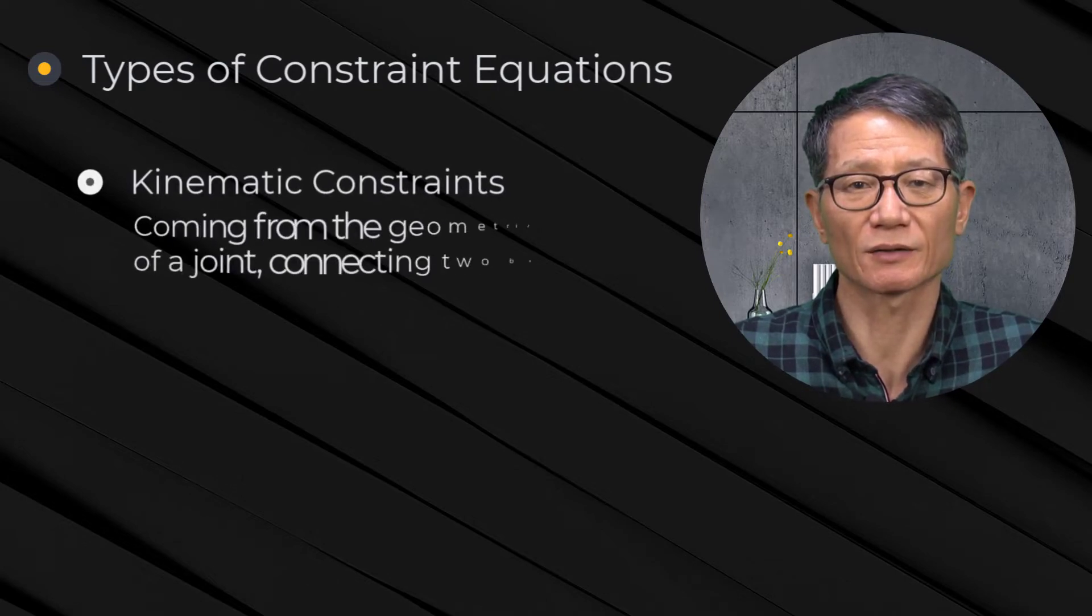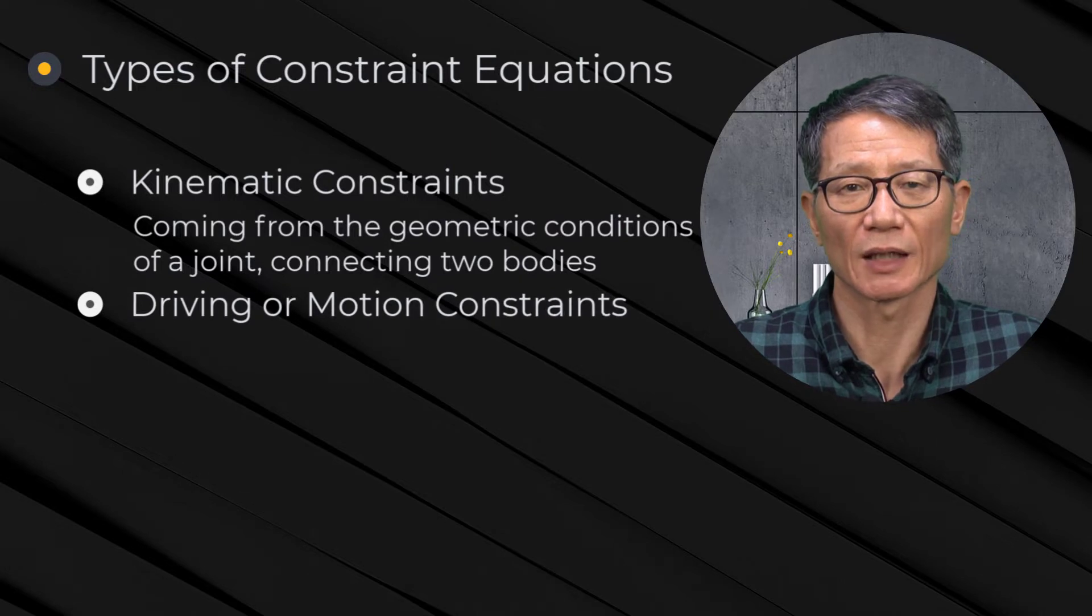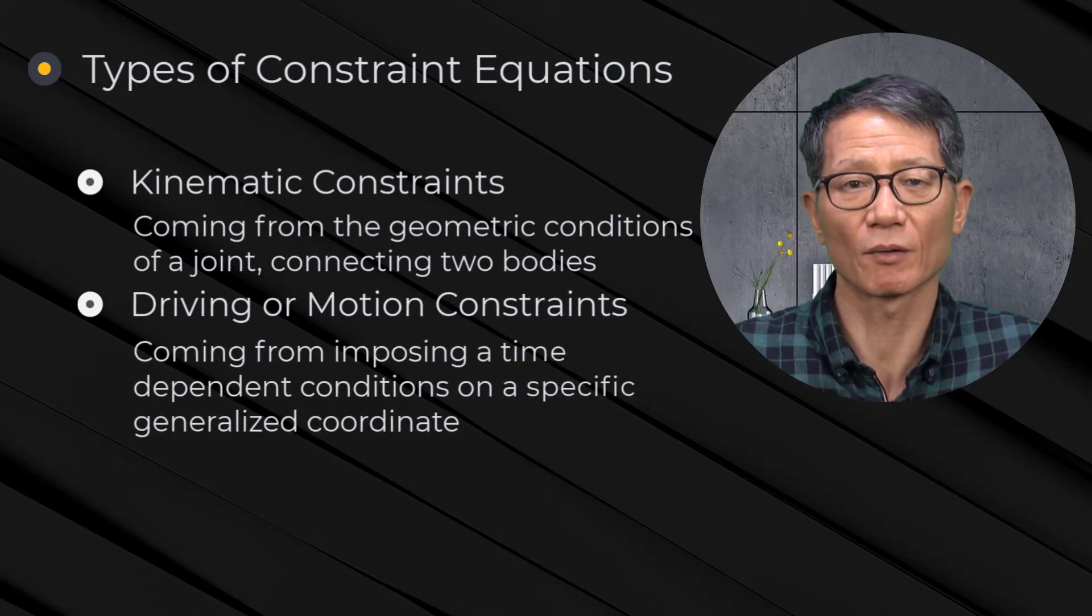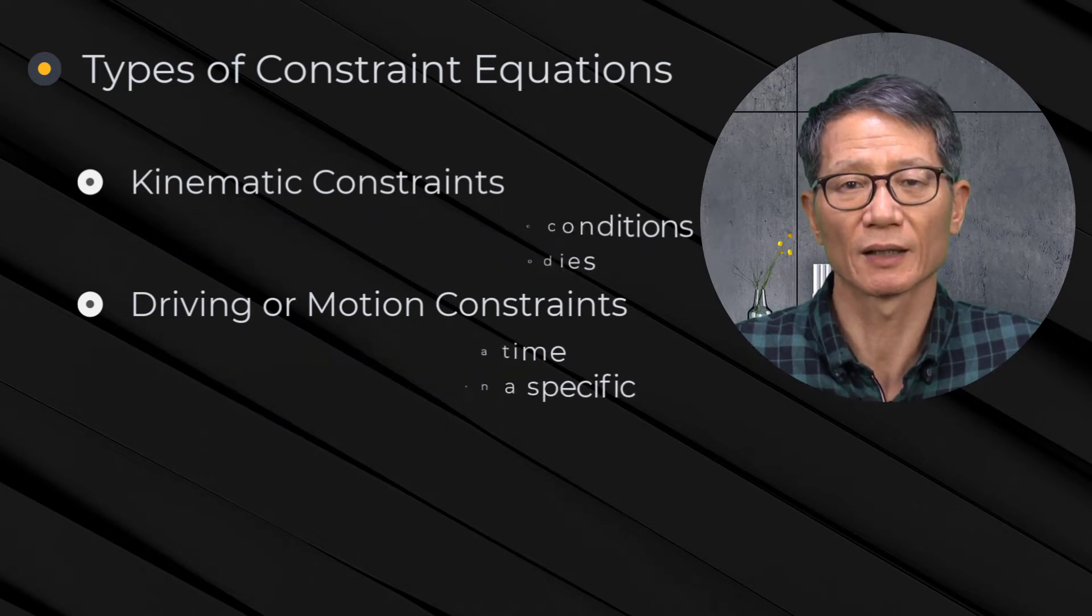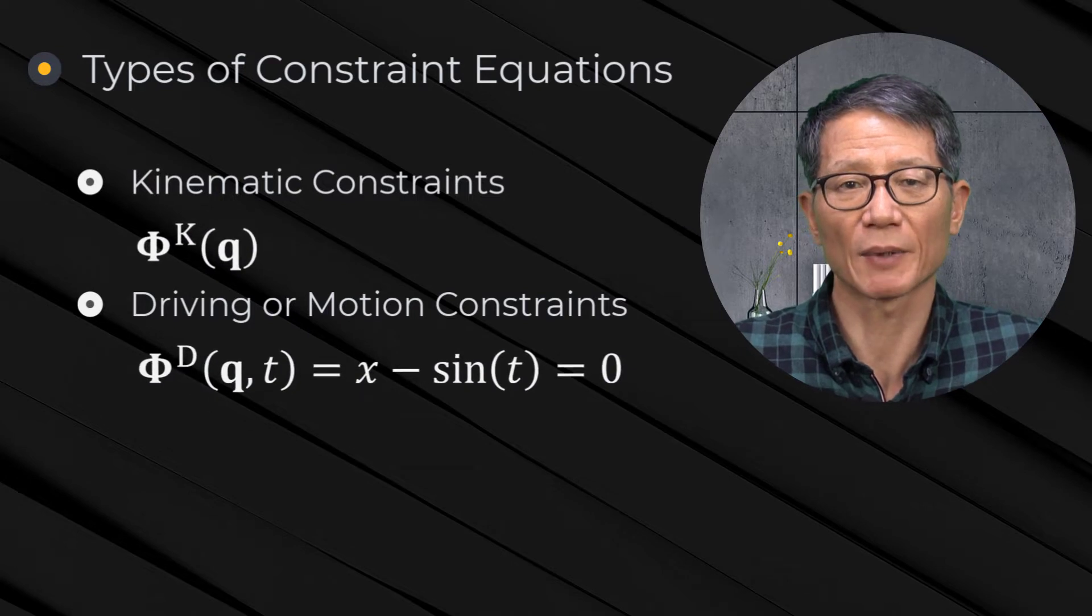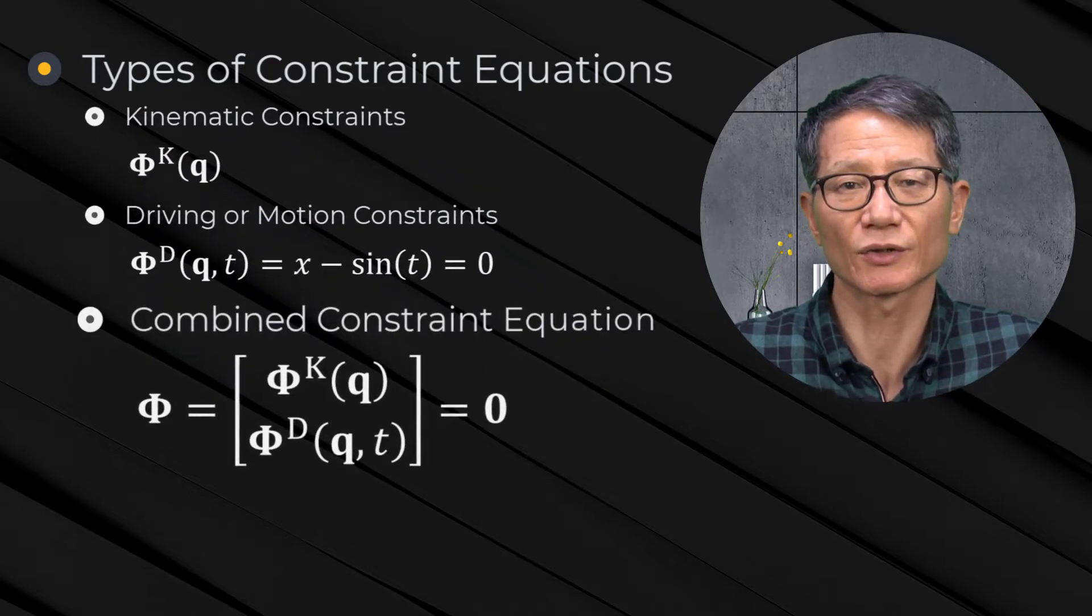One type is the kinematic constraints coming from the geometric conditions of a joint connecting two bodies. The other type is the driving or motion constraint, coming from imposing a time-dependent condition on a specific generalized coordinate. They are denoted by superscript K and D. Combining these two constraints gives the following constraint equations.